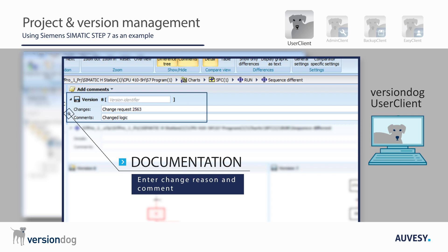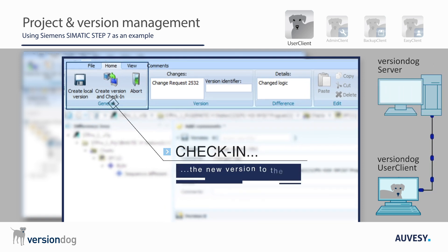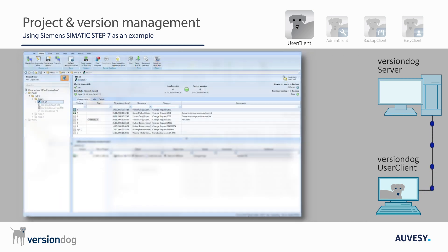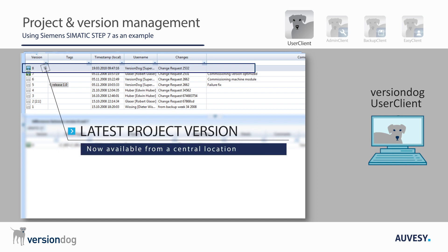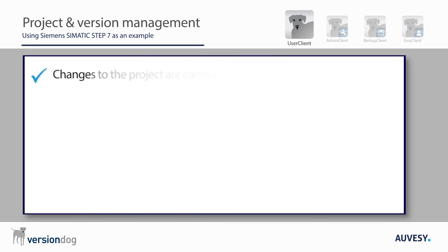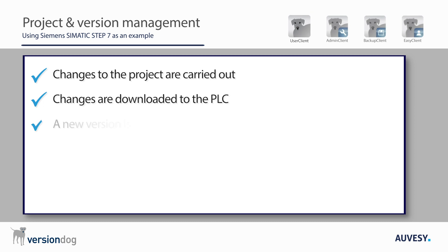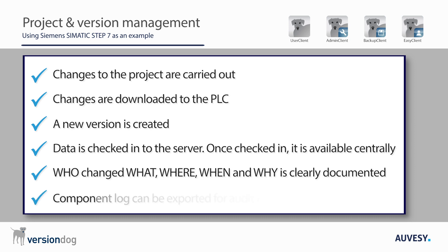Users can enter a comment detailing the changes that were made. The final step is to check in the new version to the Version Dog server. As you can see, the project version that was just created and checked in is now the latest version of the S7 project in the change history. The project data is now available from a central location and all changes have been documented — it is clear who changed what, where, when, and why. It is also possible to export and print the change history of the project for audit trails.